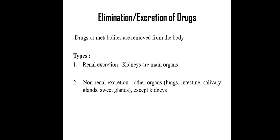There are two types of drug excretion. The first is renal excretion, where the kidneys are the main organ. Excretion carried out through the kidneys is called renal excretion. The second type is non-renal excretion, involving other organs such as the lungs, intestine, salivary glands, and sweat glands — all organs except the kidneys.